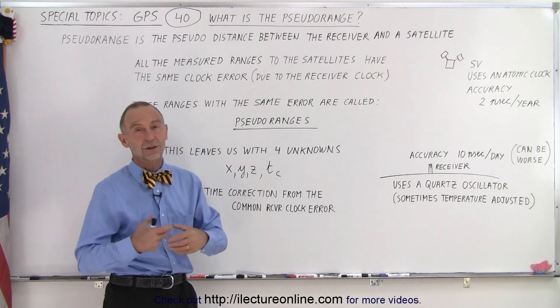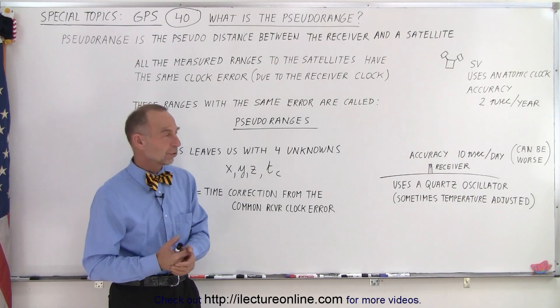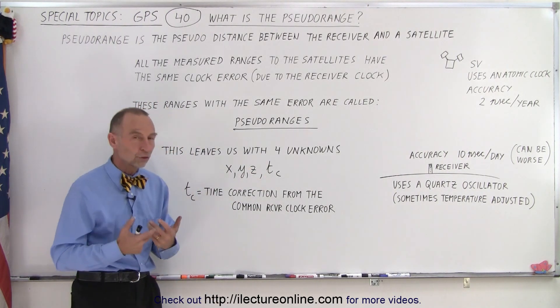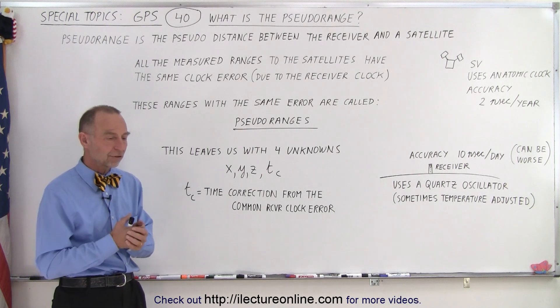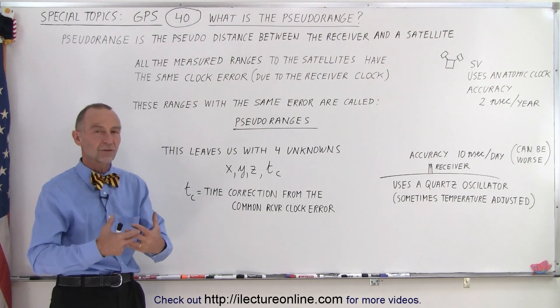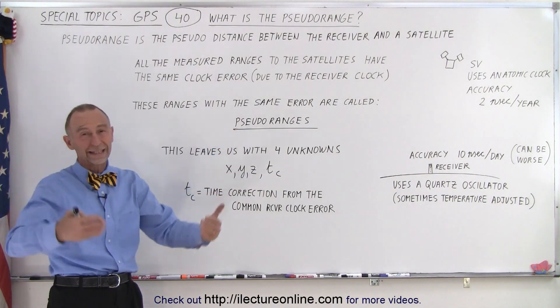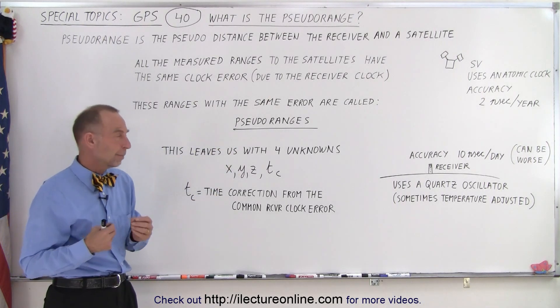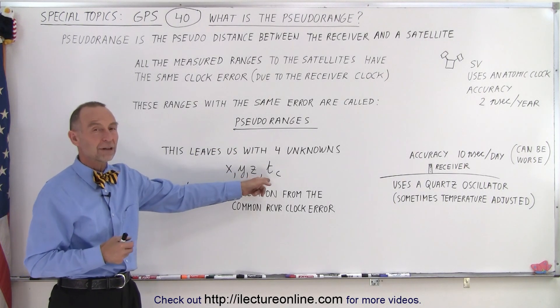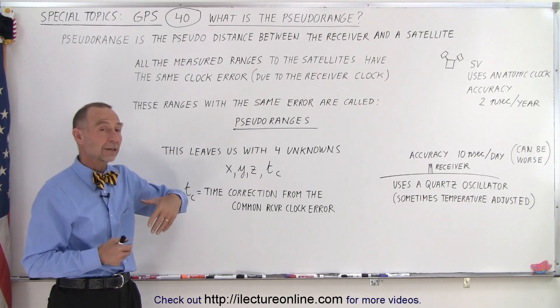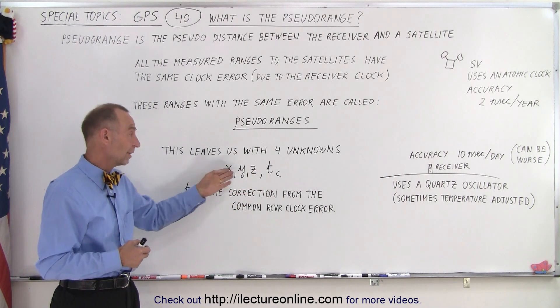So that's why we use the word pseudo range. It gives us the initial position of the receiver, or at least initial distances between the receiver and the satellites, based upon assuming we have a common clock error.